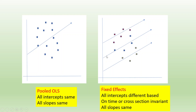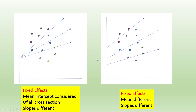In the case of fixed effects, all intercepts differ based on time or cross-section, while all slopes are the same. In another variation, the mean intercept of all cross-sections is considered but slopes are different. In the full fixed effects case, both intercepts and slopes are different.